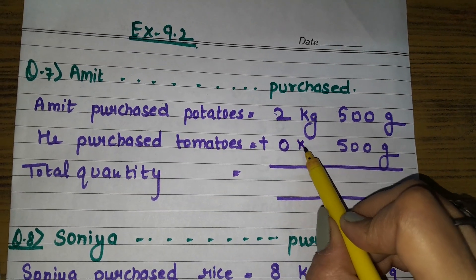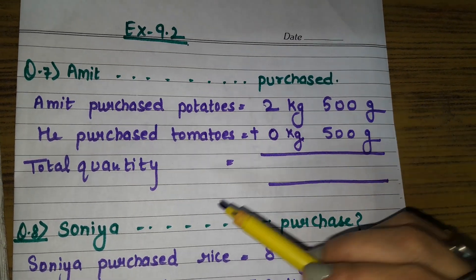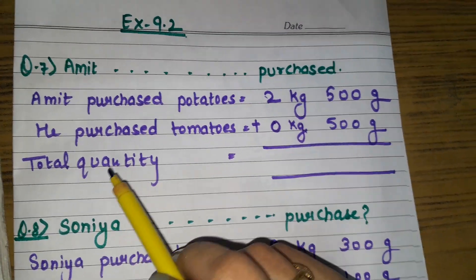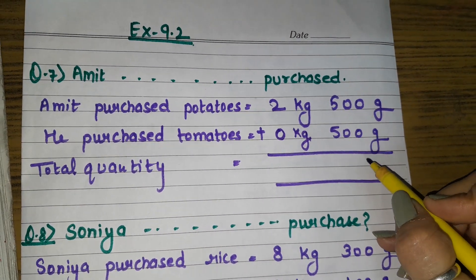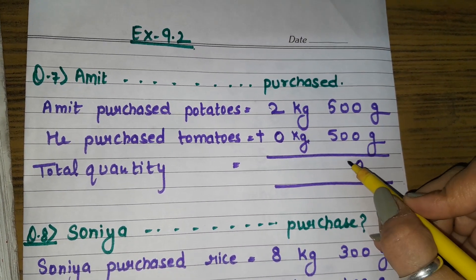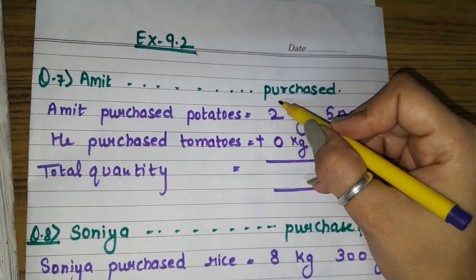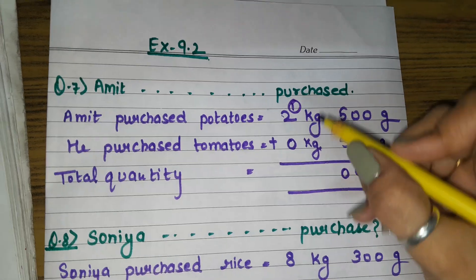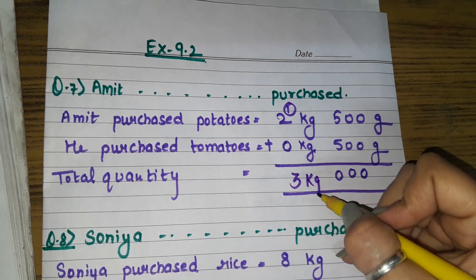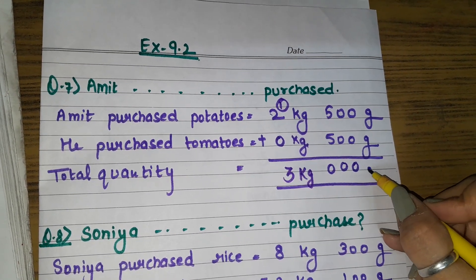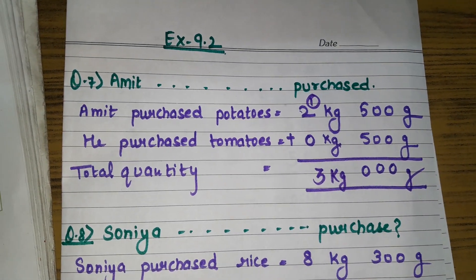Since no kg value is given for tomatoes, you can write 0 kg there. Since total quantity is asked, we will add. 0 plus 0 is 0, 0 plus 0 is 0, 5 plus 5 is 10, write 0 carry 1, 2 plus 1 is 3. So total is 3 kg 0 grams — he purchased 3 kg vegetables in total.